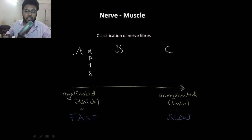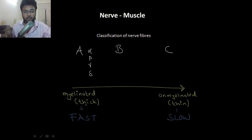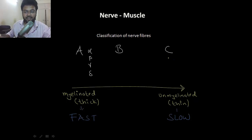As you move from left to right, myelination decreases. A and B are myelinated, hence thick. Myelination prevents the current from leaking out, therefore they are fast. C is unmyelinated, hence thin and is also slow.